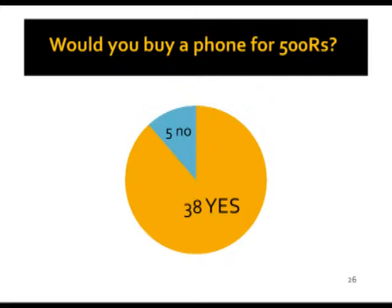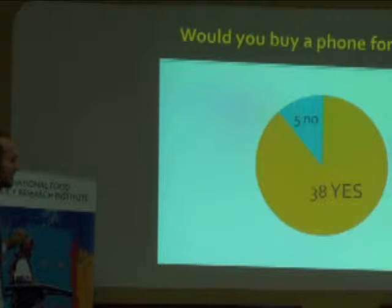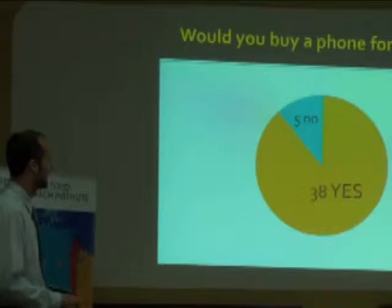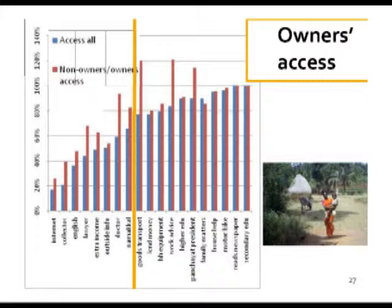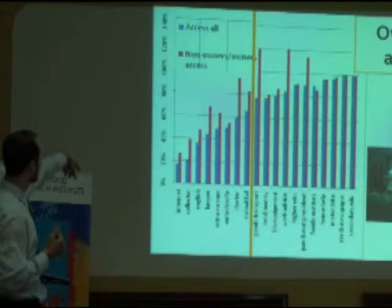This is quite an important question: would you buy a mobile phone if it cost only 500 rupees? At the time of the survey, the cheapest mobile phones were around 1,500 rupees, or minimum second-hand 1,000 rupees. Among those 43 surveyed people who don't have a mobile phone, 38 said yes, they'd like to. This proves that affordability is the main variable explaining mobile phone ownership. Mobile phone owners also have much higher access, especially to the rare resources.